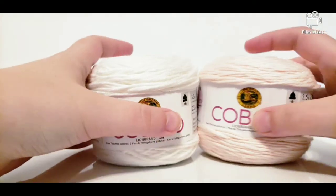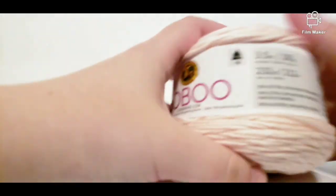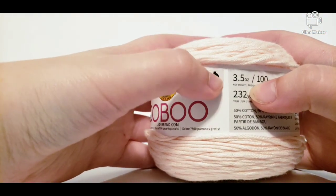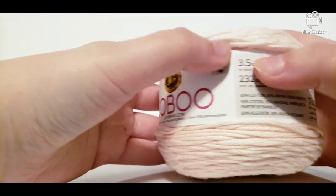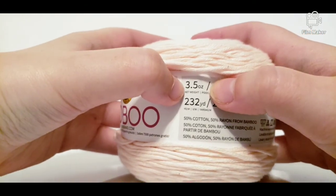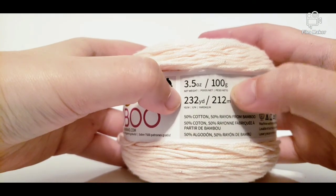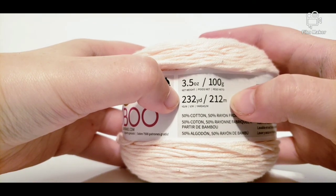Let's go ahead and start looking into it. Let's grab the pink here. This one says one ball will make a hat which I think is pretty cool. I wonder if there's a pattern on the inside. We'll have to check that out. It is 3.5 ounces or 100 grams, 232 yards or 212 meters.